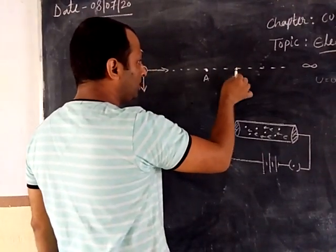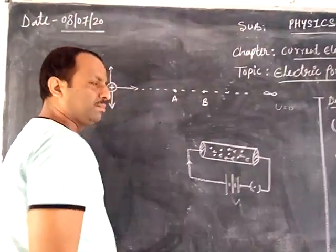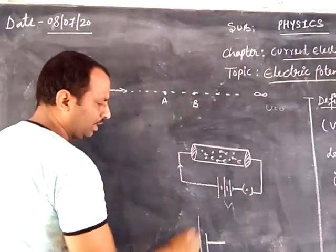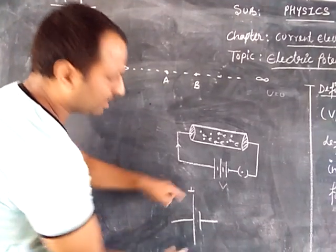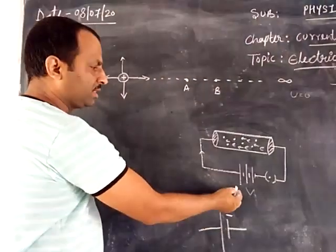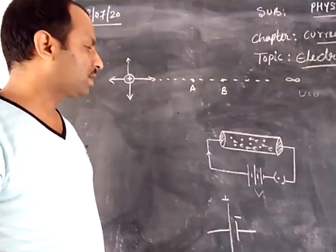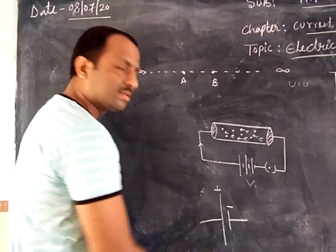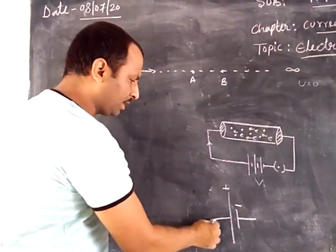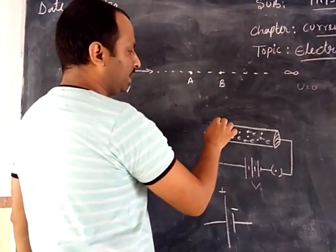Now there are two defined points, as in real circuits which produce a potential difference. In a battery symbol, the thick line indicates higher potential and the small line indicates lower potential. So the current flows from the higher potential (thick line) to the lower potential (small line). The potential difference is defined between these two points.